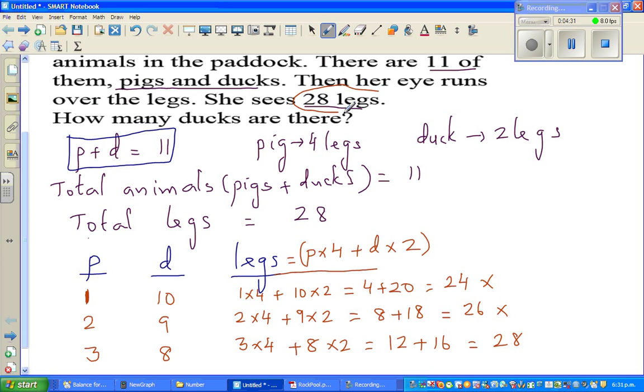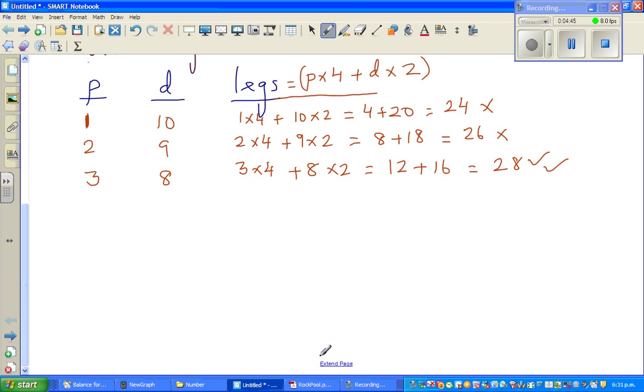So you can say hooray, we got the answer! So there are how many ducks? Therefore, so we can say there are 8 ducks. There are 8 ducks. So 8 ducks and 3 pigs.